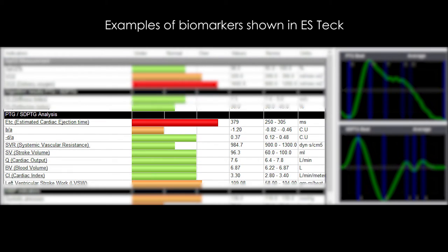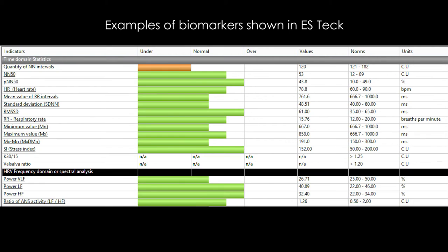The last part shows physiological biomarkers for the heart. In this image you see a selection of different biomarkers from the autonomic nervous system that you can use to create a stress profile.